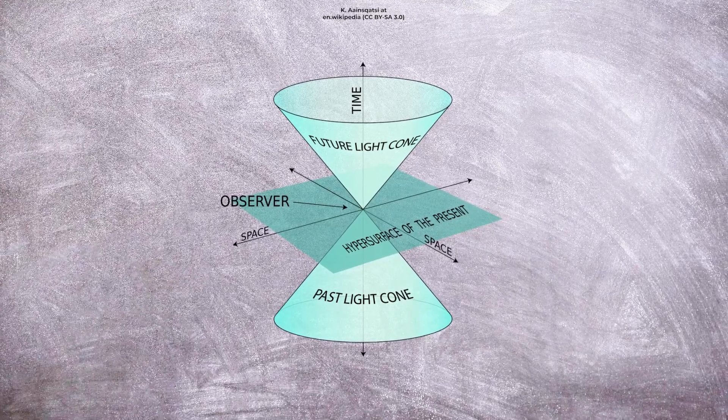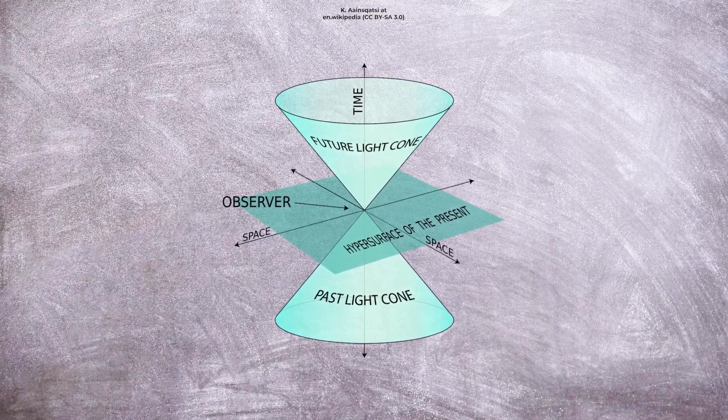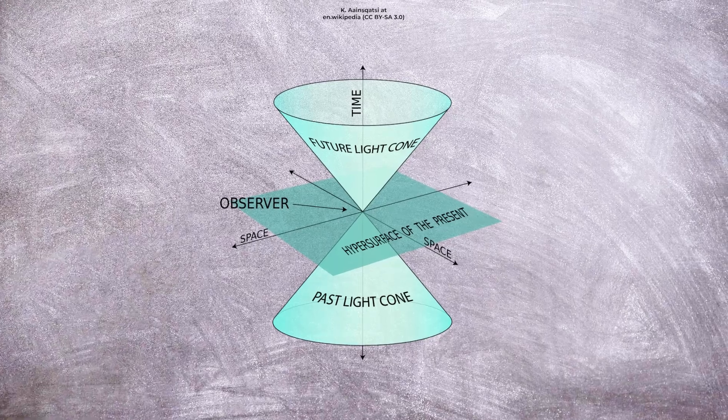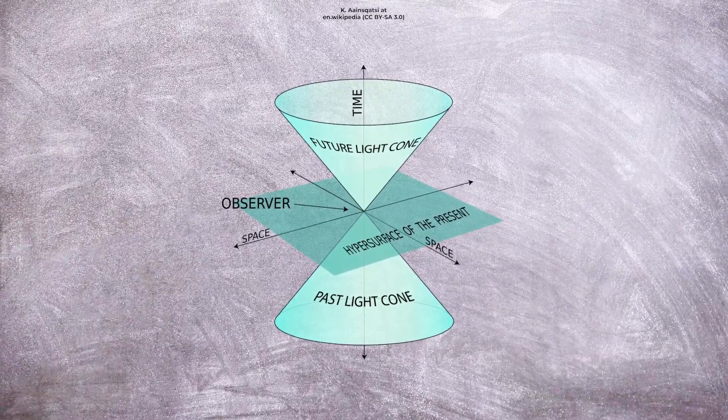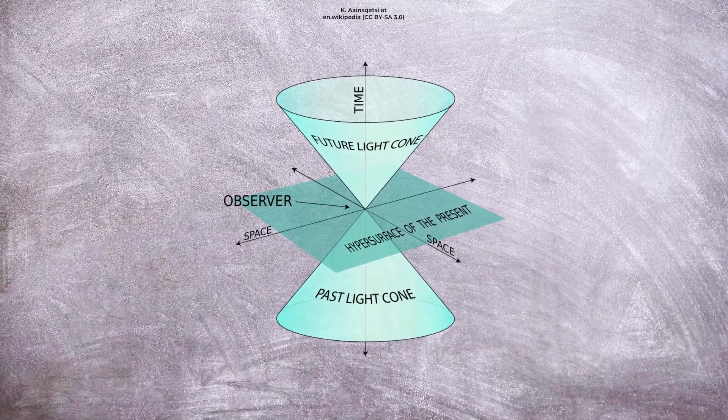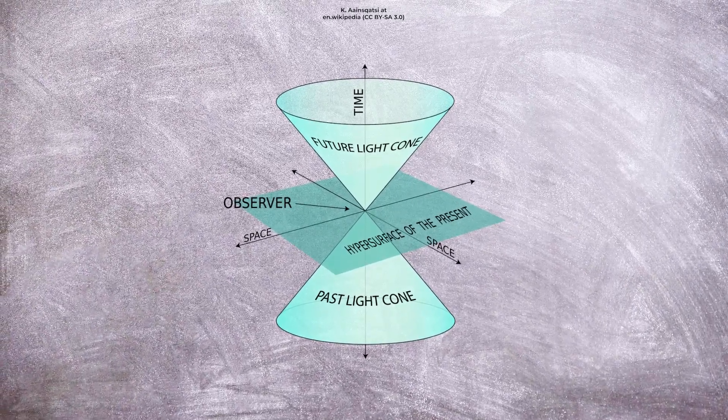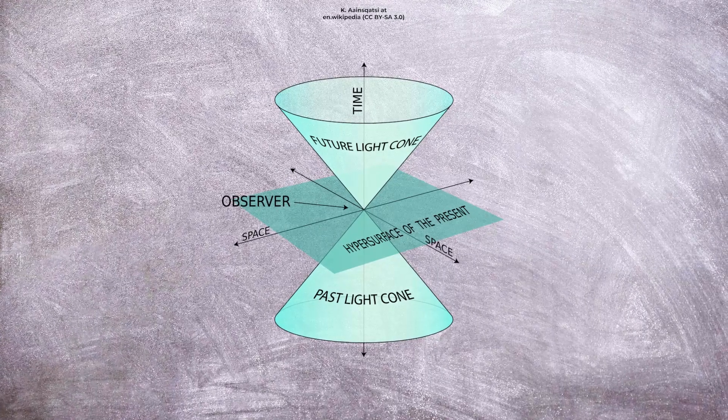The concept of the 4D universe is known as Minkowski space, which unifies three-dimensional Euclidean space and time into a four-dimensional manifold, where the space-time interval between any two events is independent of the inertial frame of reference in which they are recorded.